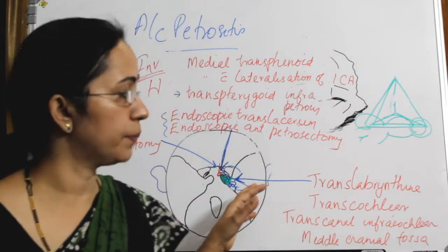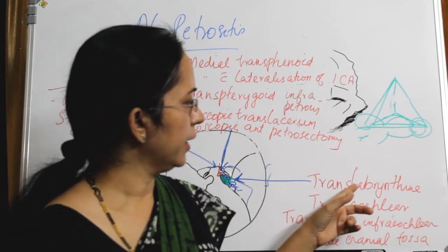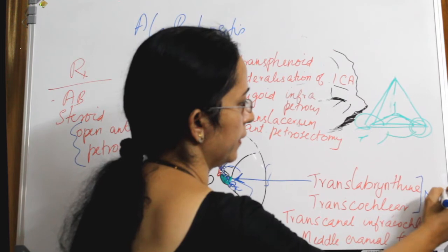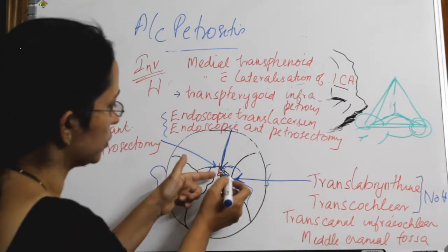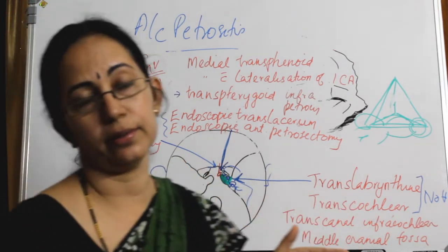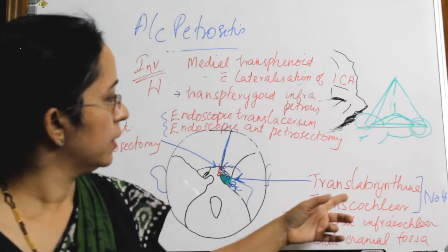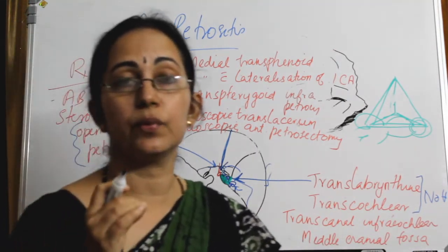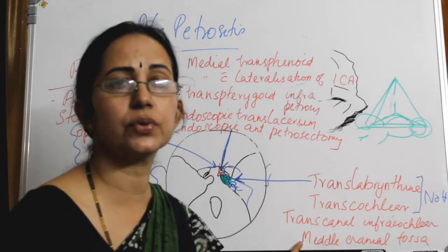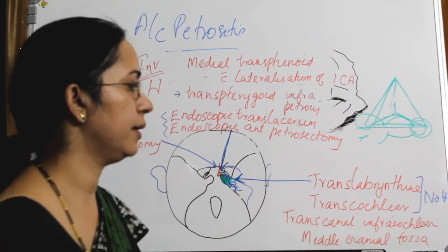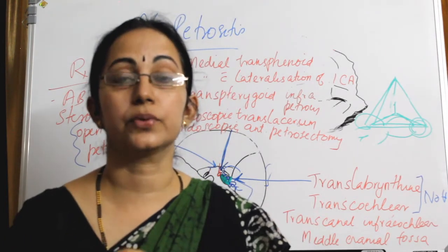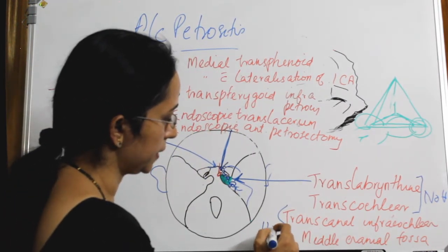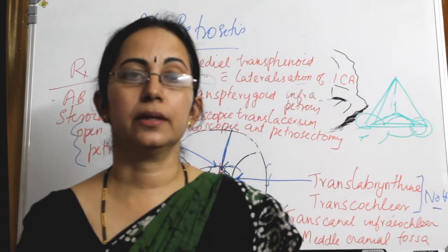Otolaryngologists prefer the lateral approach. Of these lateral approaches, if the patient has no hearing, either a translabyrinthine or transcochlear approach is used — going through the labyrinth or cochlea to approach the petrous pyramid. If we want to preserve hearing, the best-suited approaches are the middle cranial fossa approach and the transcanal intracochlear approach, which gives wide exposure of the area.